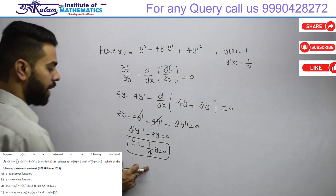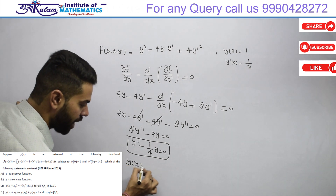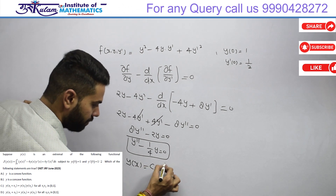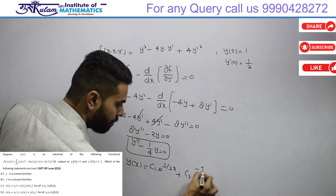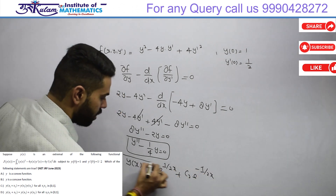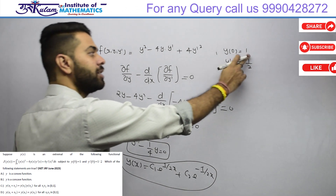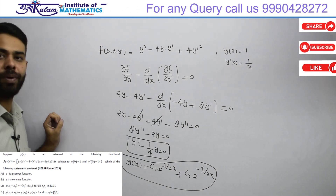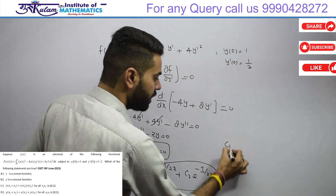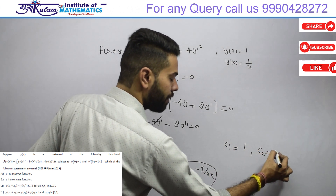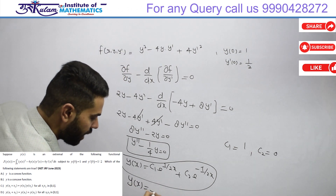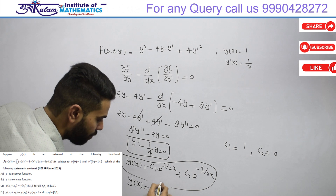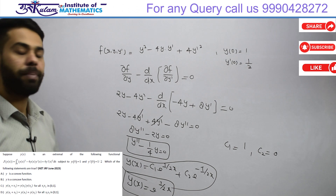यह second order linear differential equation है with constant coefficients। इसको solve करने पर y(x) = c₁e^(x/2) + c₂e^(-x/2) आता है। Boundary conditions y(0)=1 और y'(0)=1/2 use करने पर c₁ = 1 और c₂ = 0 मिलता है।